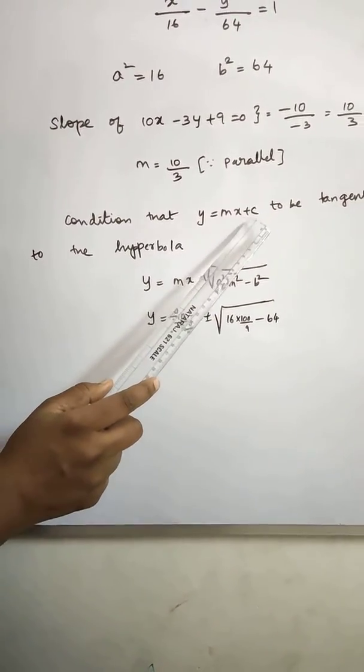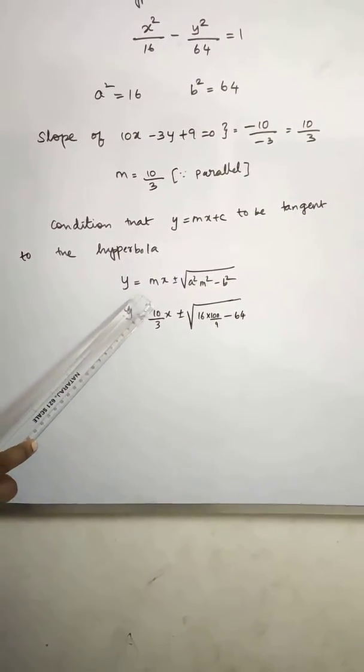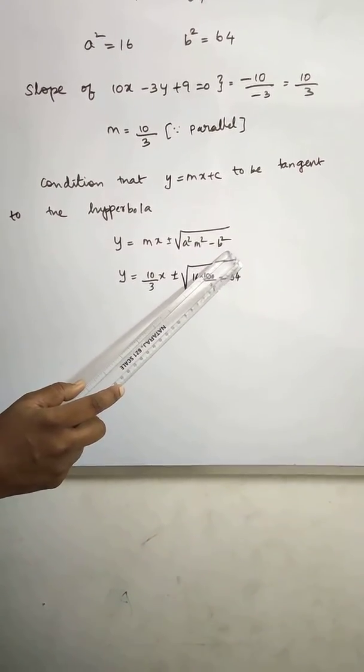Condition y equal to mx plus c to be tangent to the hyperbola: y is equal to mx plus or minus square root of a² m² minus b².